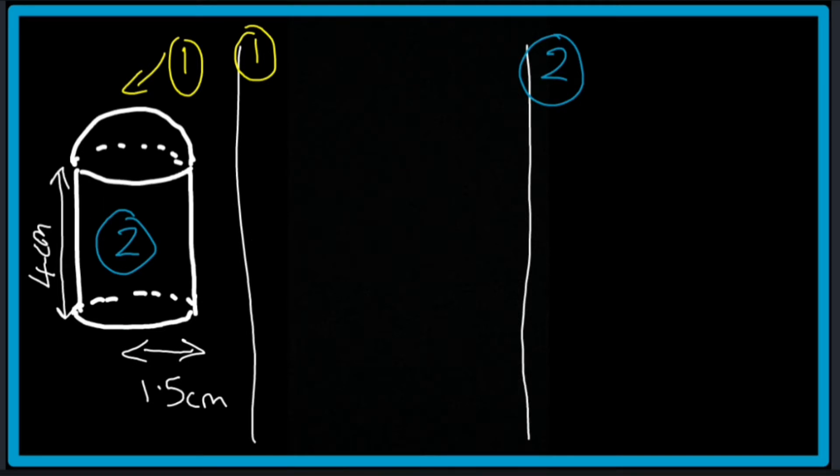Now to get the volume of the hemisphere I'm going to use the formula two thirds pi r cubed. The reason for using this formula is because it's a hemisphere and not a sphere. If it was a sphere I would use four thirds pi r cubed.